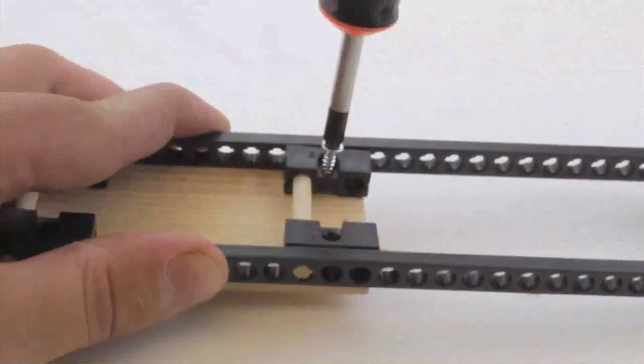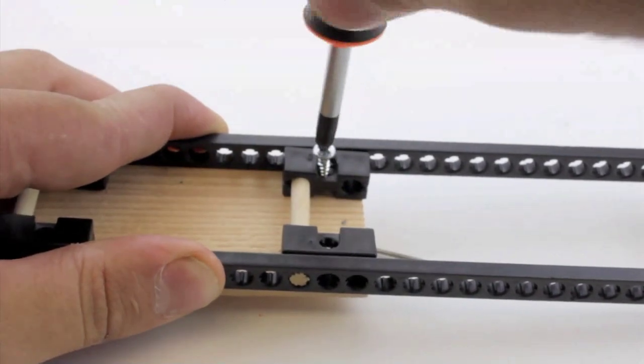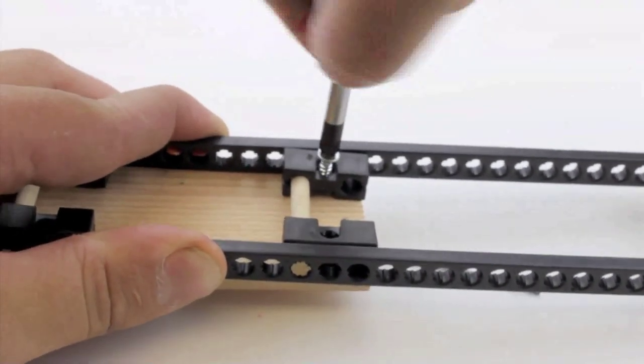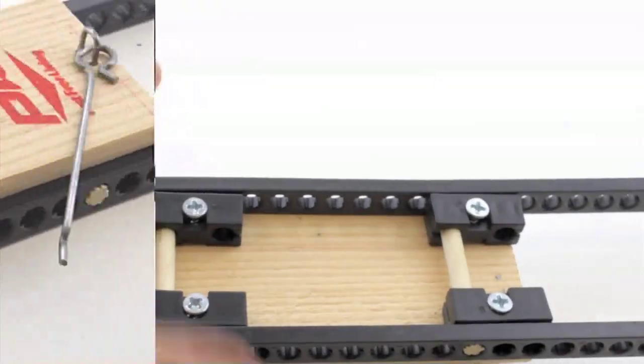Place the mousetrap in the position that you want, then flip the assembly over. Using the number 6 screws, attach the mousetrap to the frame. Put a little bit of pressure into your screw when you first start screwing so it grabs onto the wood. Attach the mousetrap using all 4 screws.